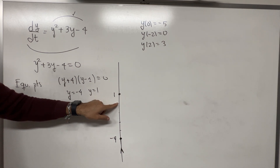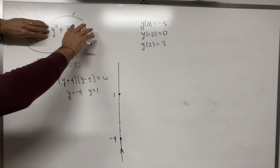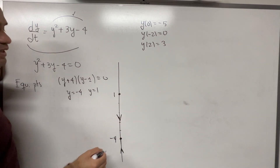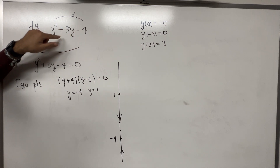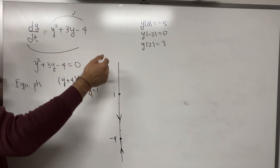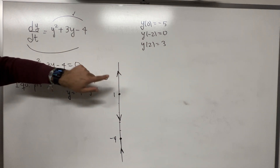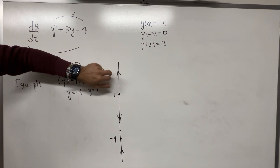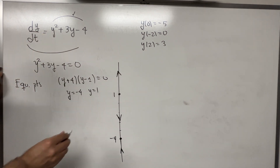The easiest point to pick for the middle piece is zero. When we substitute y = 0, the expression becomes -4, which is negative — so in this piece we have an arrow going down. If we pick y = 5 for the third piece, we get 25 + 15 - 4, which is positive, so the arrow goes up. This gives us the direction of the arrows, and this is what is called the phase line.